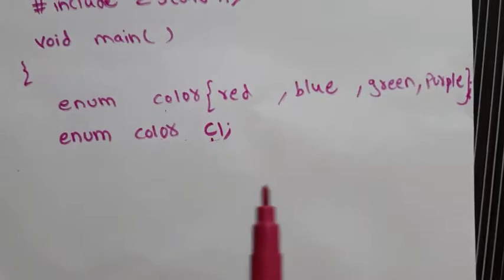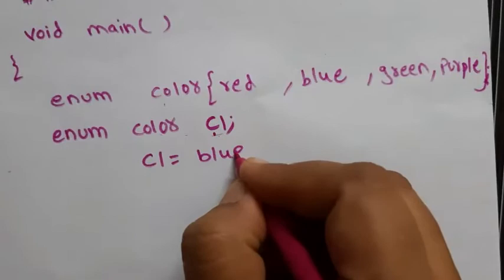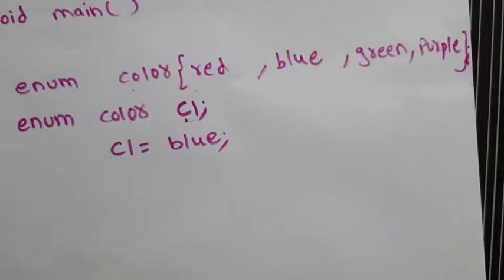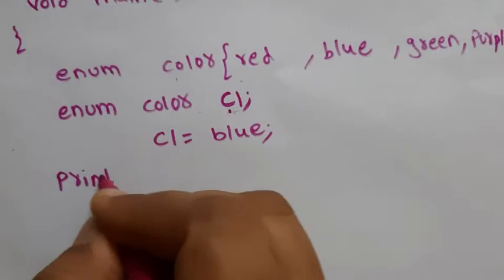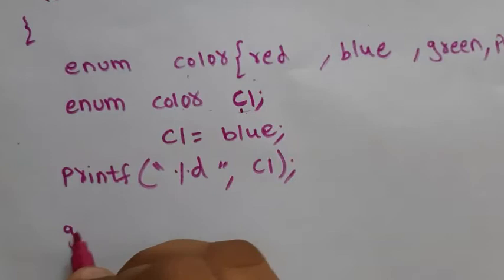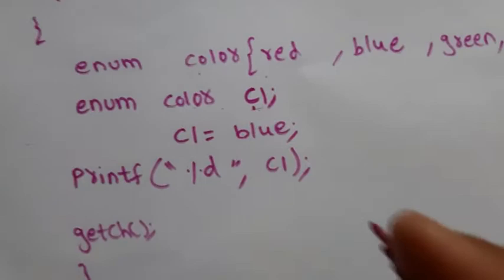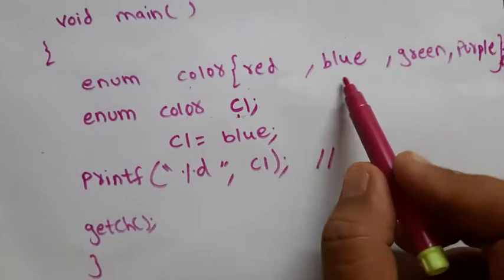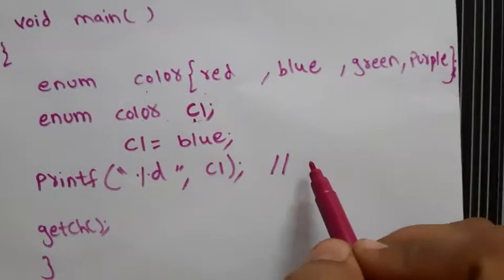I created my own data type 'color' and a variable 'c1'. Now I can assign a value: c1 = blue. Compulsorily, the value you assign must be present in the list — and blue is in the list. Now if I print c1 using printf with %d, what will be the output?